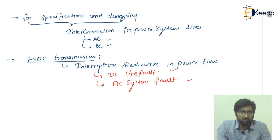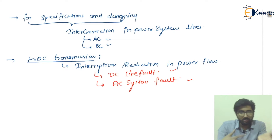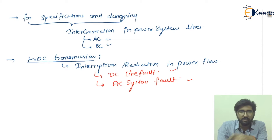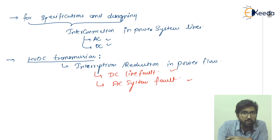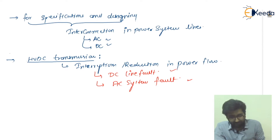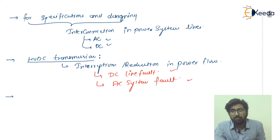Let us suppose a fault has occurred. Then there are some circuit breakers or devices which can recover — or you can say the recovery voltage can be done here. But that recovery voltage should be fast.